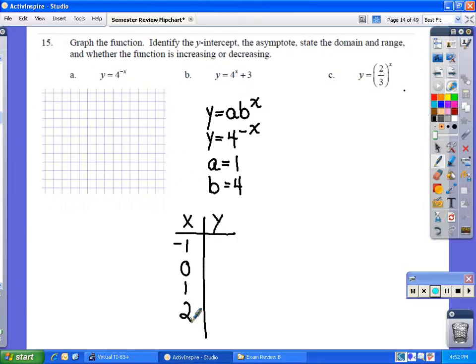And so 4 to the opposite of negative 1 is 4 to the first, or 4. 4 to the 0 is 1. 4 to the negative 1 is 1/4th, or 0.25, if you're more comfortable with that. And 4 to the negative 2 would be 1 over 4 to the 2nd, or 1/16.